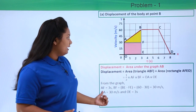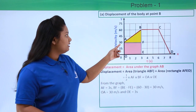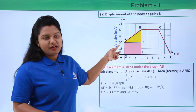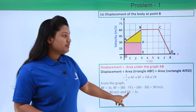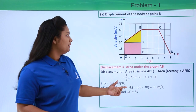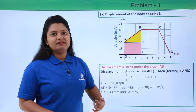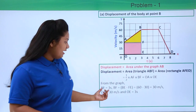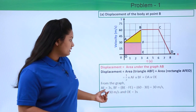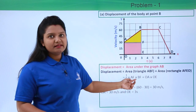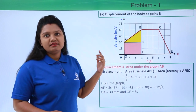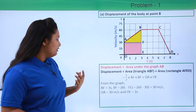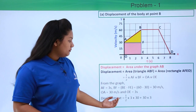OA is equal to 30 meters per second, as clearly apparent from the graph, and OE is 2 seconds. Now we have all the values needed to substitute into the expression for displacement.